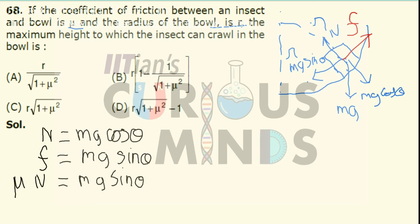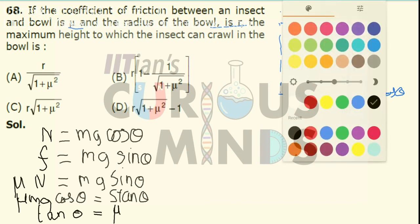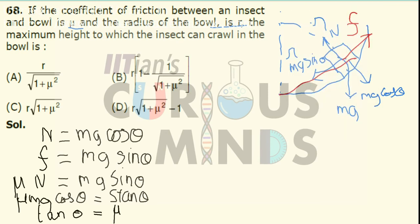Substituting N = Mg cosθ into the friction equation F = μN, we get tanθ = μ. Now understand that if this angle is equal to θ at one point on the bowl, the same angle θ appears on the other side as well by symmetry.